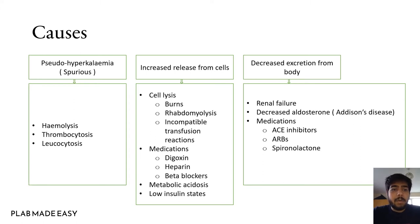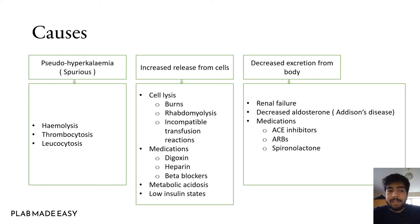The first mechanism is pseudo-hyperkalemia, which is false hyperkalemia. It is caused by hemolysis — when you take a blood sample and shake it vigorously, it leads to hemolysis and an increase in potassium. The second cause is thrombocytosis, and the third is leukocytosis.